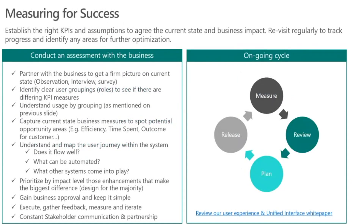Once you have your initial set of KPIs, you want to engage with the business to make sure you have a good understanding of the current state. You also want to get agreement from the business on any assumptions you may have. Run an assessment with the business to understand where things stand today, what the gaps and challenges are, and if there are any differences in KPIs across different user groups.